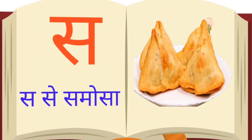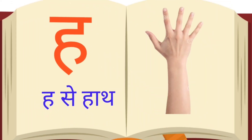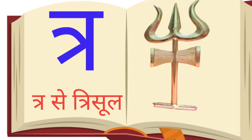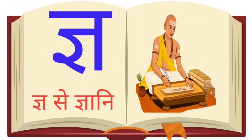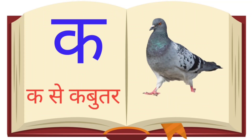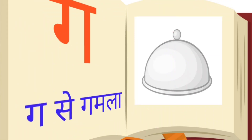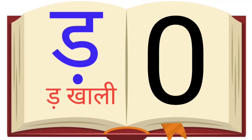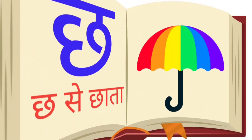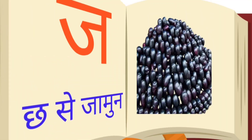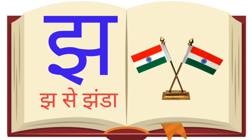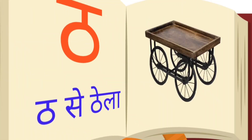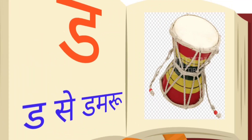ય સે યાક, ર સે રાખી, લ સે ફાનસ, વ સે વકે, ક્ષ સે શરીફા. ક સે કબુતર, ખ સે ખજૂર, ગ સે ગમલા, ઘ સે ઘર. ચ સે ચા, છ સે છાતા, જ સે જામુન, ટ સે ટમાટર.